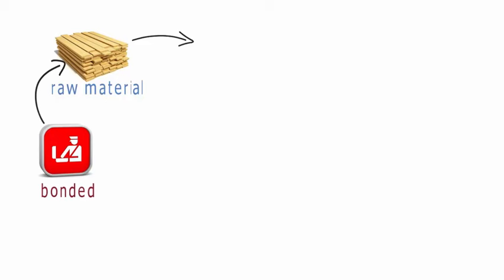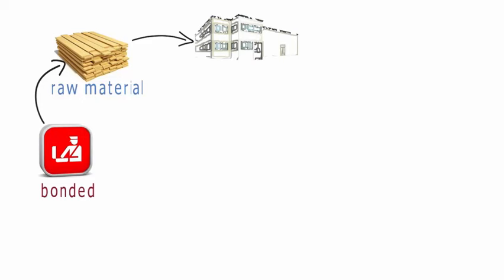In order to make a table, the raw materials such as the wood and glue and screws are used. These items are moved to the factory and used in the table manufacturing process, therefore becoming work in progress inventory.